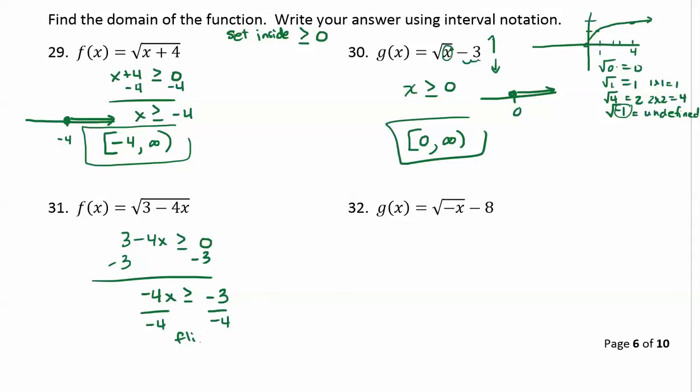Now here's where you have to remember that when you divide or multiply by negatives, that's going to flip the direction of your inequality around. So now I have x is less than or equal to positive 3 fourths.